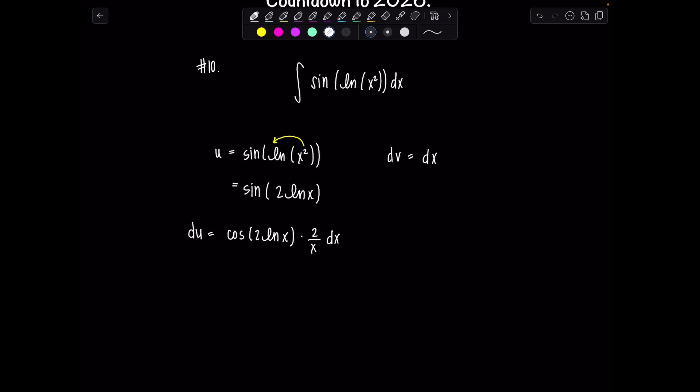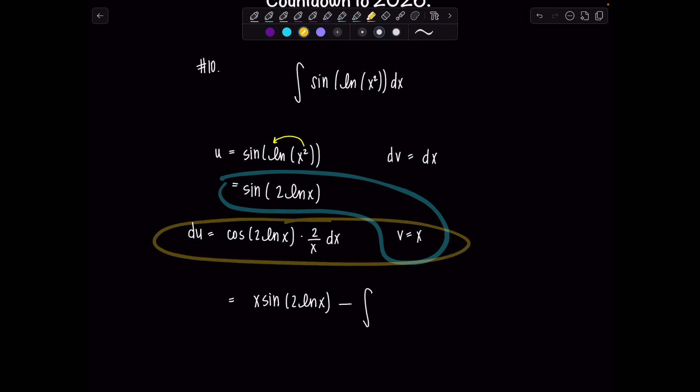And then if dv is dx, then v is going to be plain old x. So we have everything equals product of uv, so that'll be x sine of 2 ln of x minus integral vdu, this product here. So we have cosine of 2 ln of x times 2 over x times another x dx.